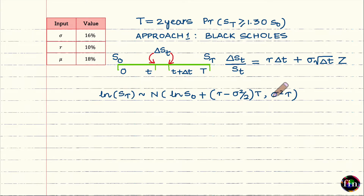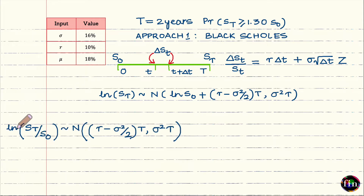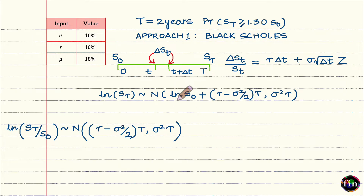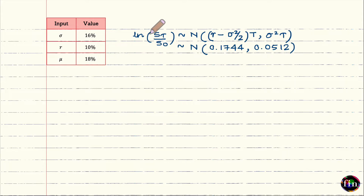Given this, the distribution of ln(S-t over S-naught) is also normal. It differs only in that the mean excludes the ln(S-naught) term: the mean is simply (r minus sigma-squared over 2) times t, and the variance remains sigma-squared times t. Substituting r equals 0.1, sigma equals 0.16, and t equals 2, we get that ln(S-t over S-naught) is normally distributed with mean 0.1744 and variance 0.0512.